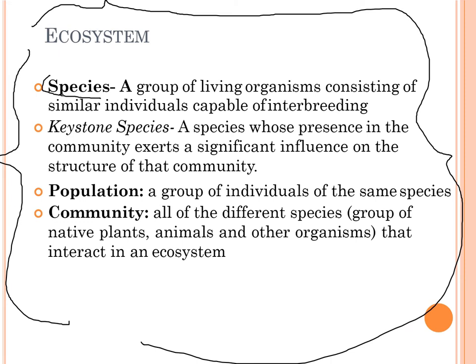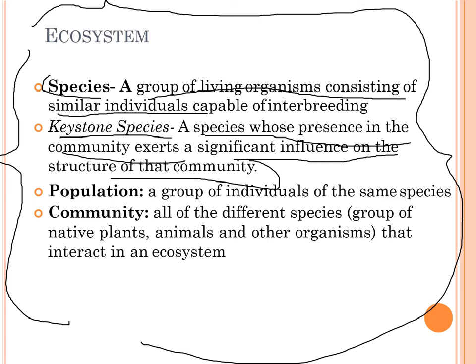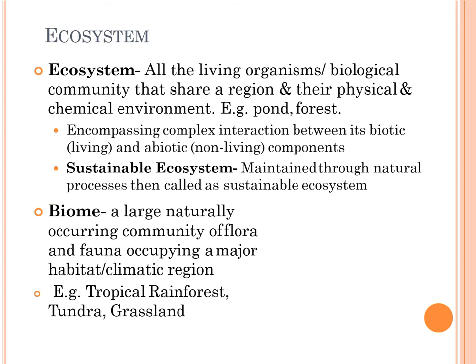Some important ecosystem terms: a species is a group of living organisms consisting of similar individuals capable of interbreeding. Keystone species are species whose presence in a community exerts a significant influence on the structure of that community. A population is a group of individuals of the same species, while a community includes all individuals of all different species in an area.